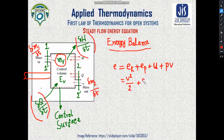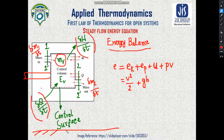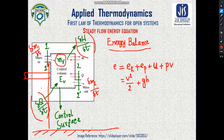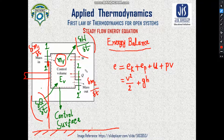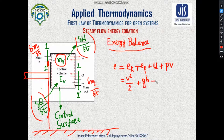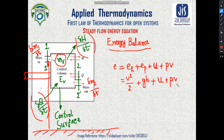So the kinetic energy is v²/2 and the potential energy is gz, where z is the height above the datum line. The inlet is at height z1 and the outlet is at height z2 with respect to the fixed datum line. The internal energy is u, and the pressure energy is pv. These four components together constitute the total specific energy e of the fluid stream.